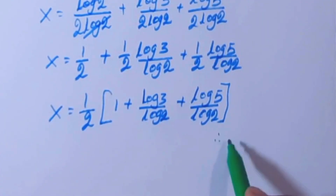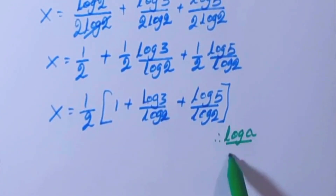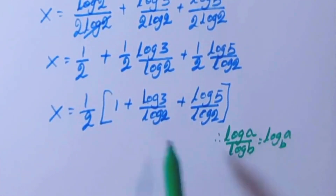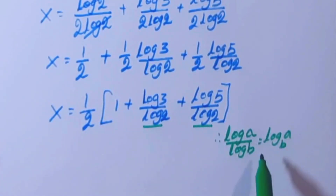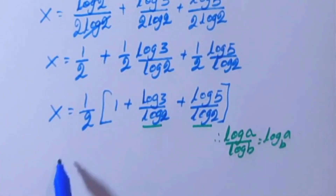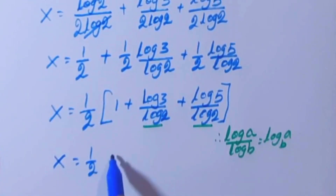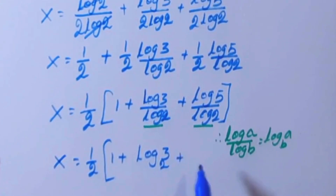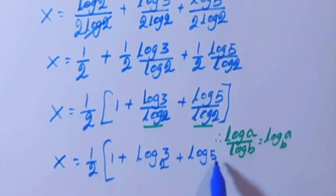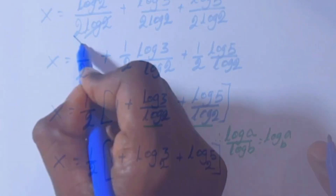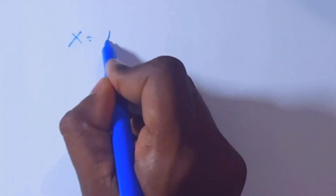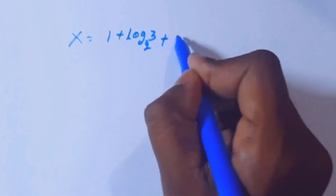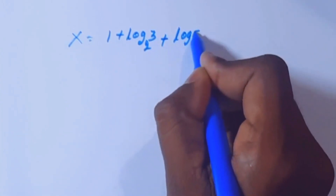Using the change of base formula, log A by log B equals log_B(A). Applying this, x equals (1/2)(1 plus log base 2 of 3 plus log base 2 of 5).